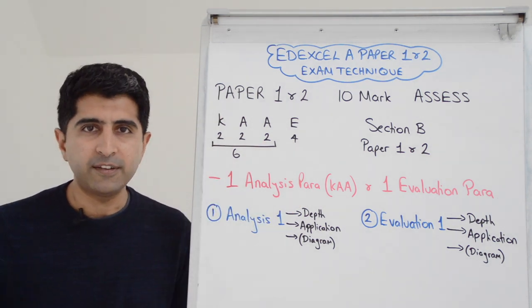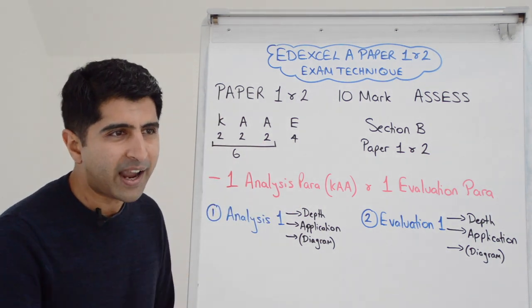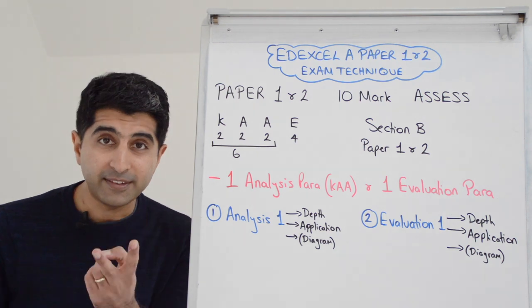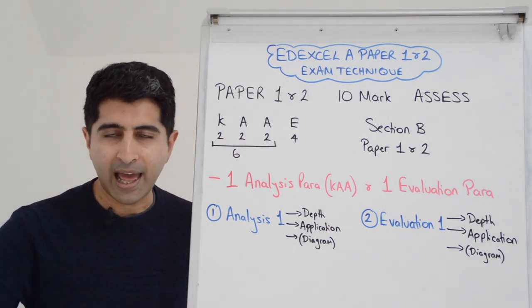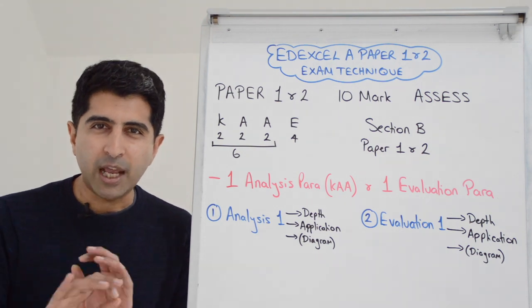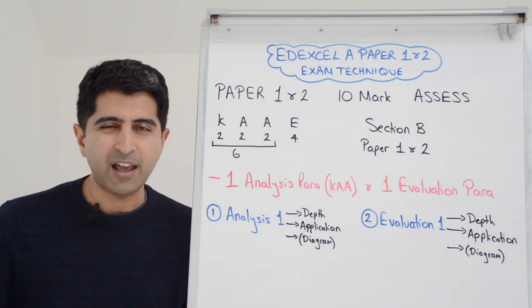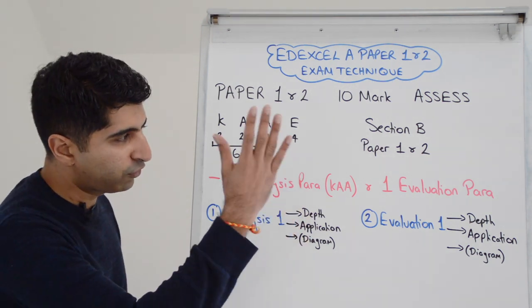Sometimes this 10 marker will say assess two things, two factors, two reasons, two policies. It might say assess two of something, in which case you need another analysis paragraph, a second one. But generally speaking, 90% of the time it's just assess something. So this structure will work brilliantly.